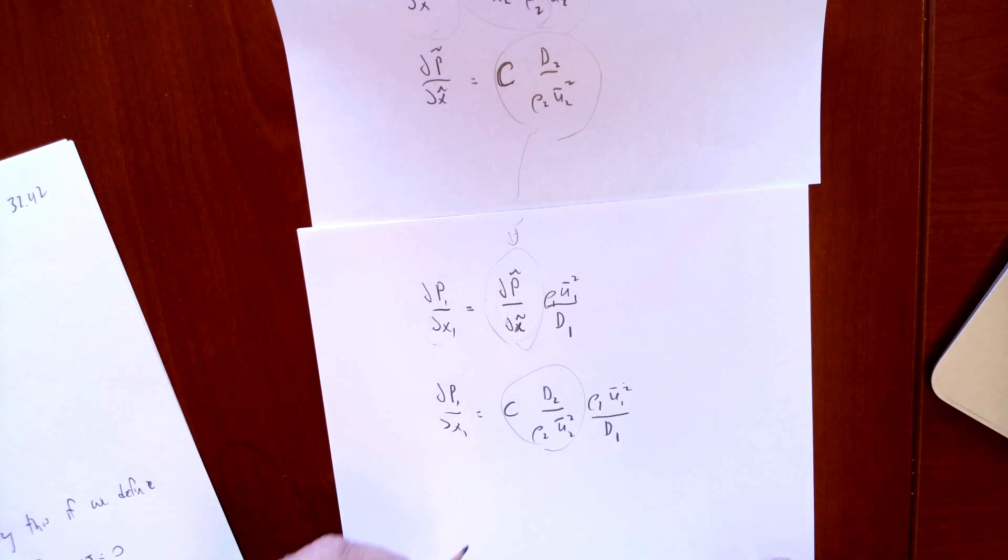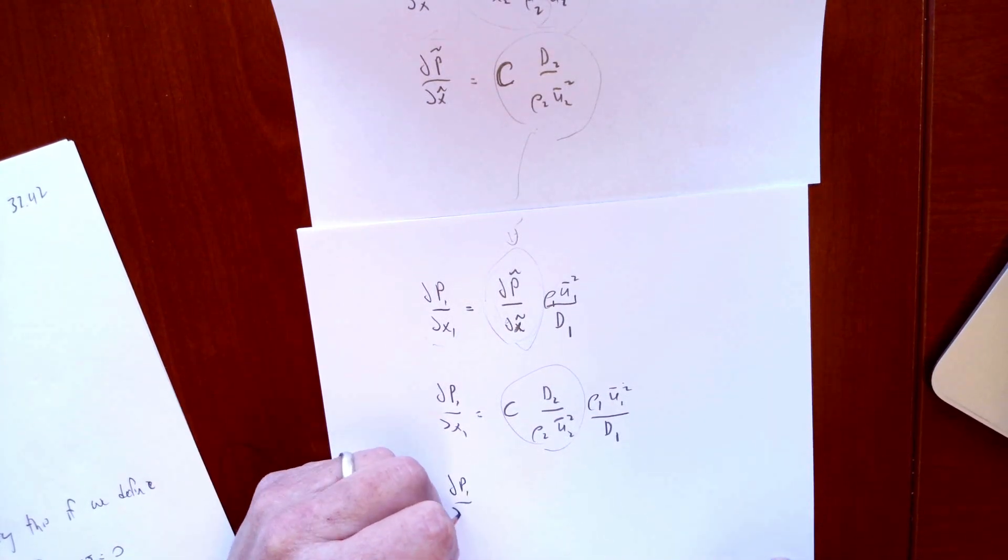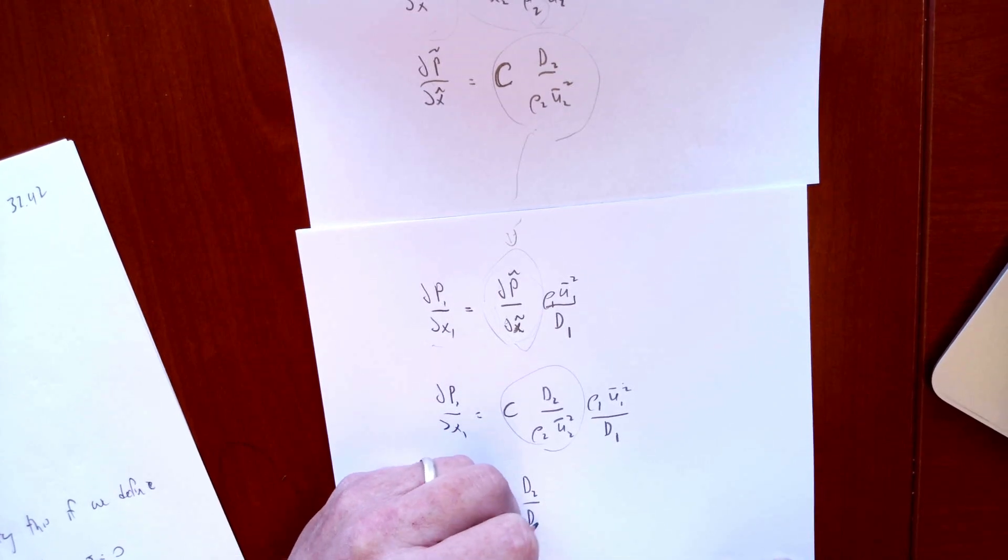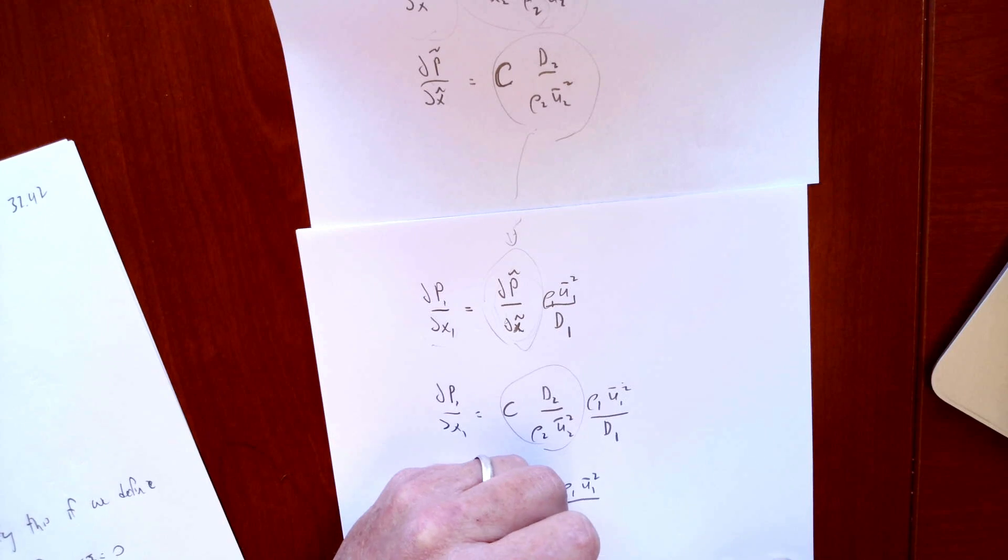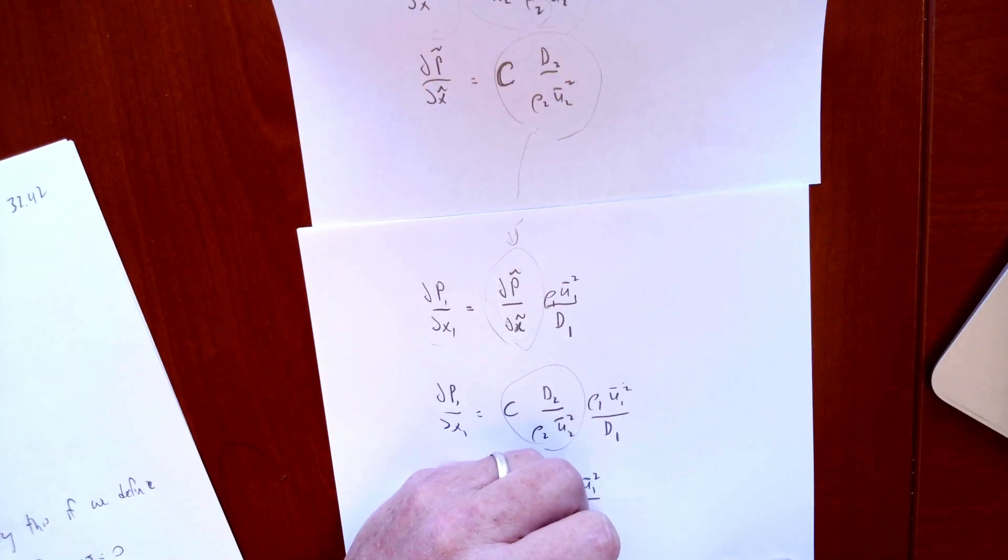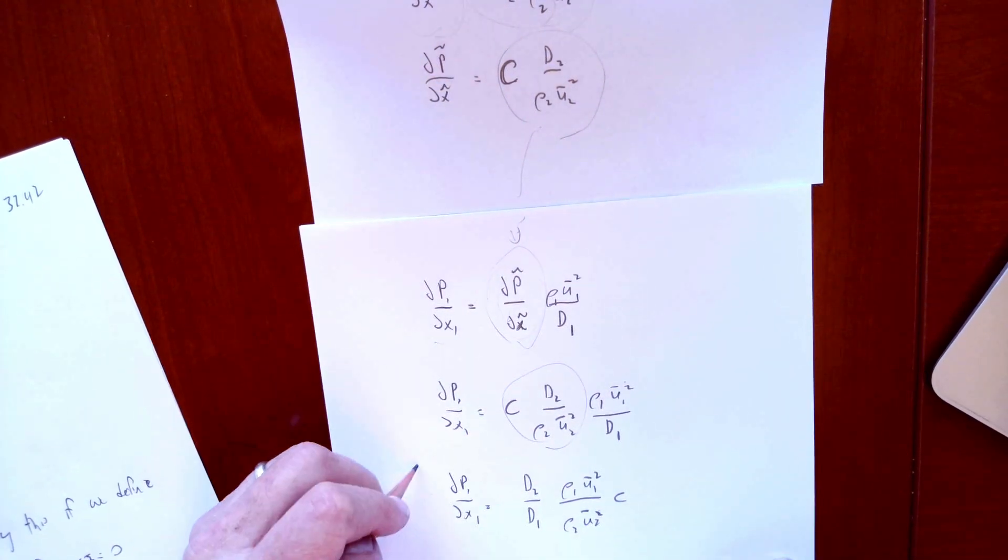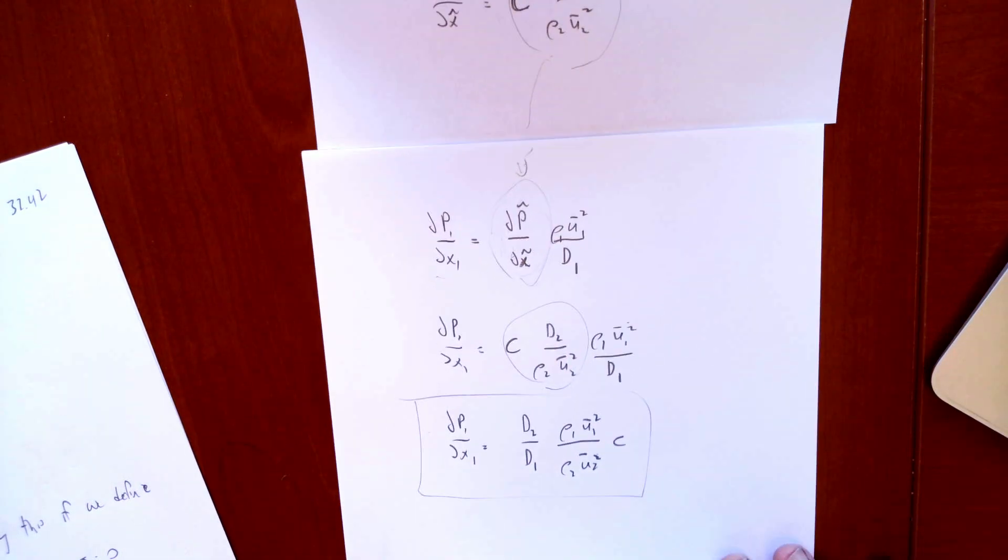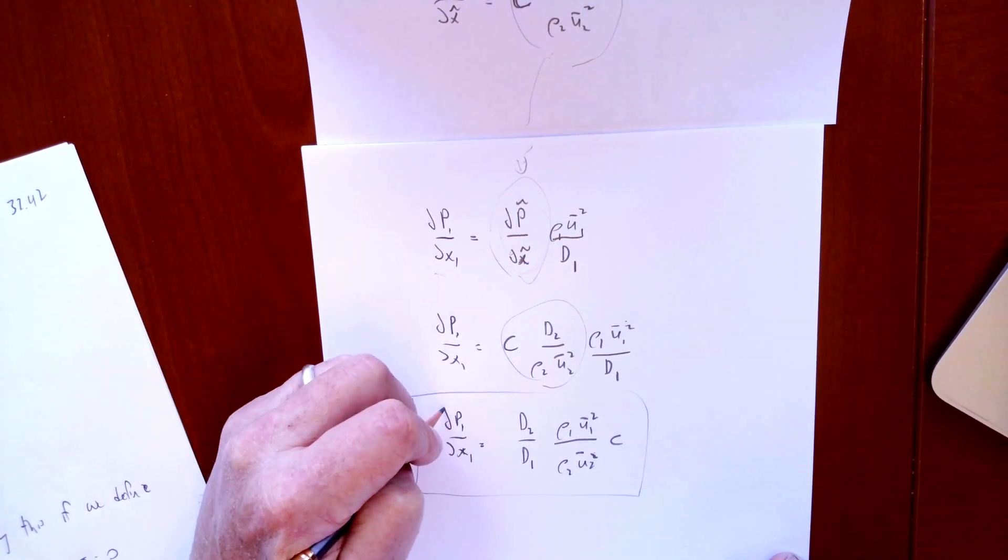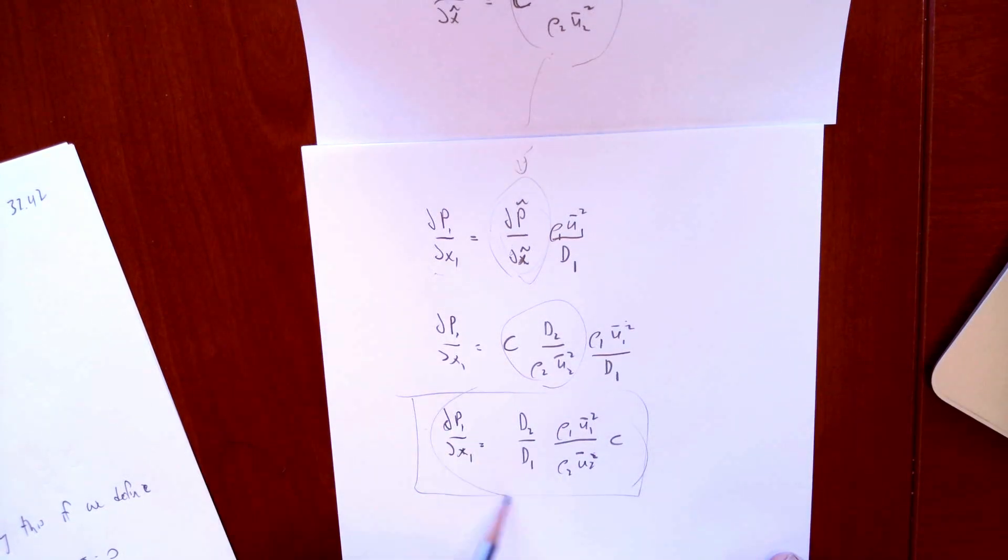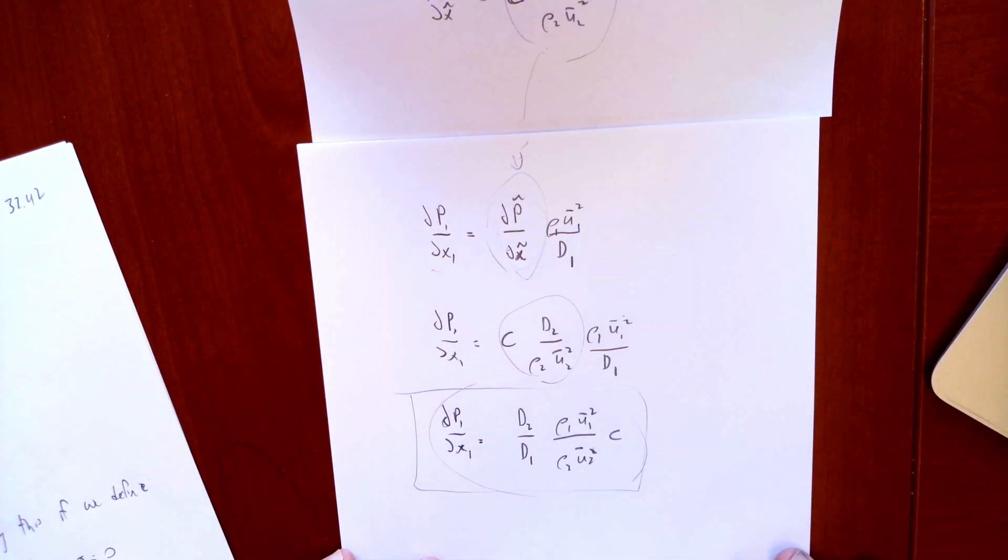So we end up with a final form for DP1/DX1, which is equal to D2 over D1 times ρ1U1 squared over ρ2U2 squared times C. And that is the answer. That's the relationship based on our solution for the required pressure gradient to drive the flow in that larger pipe.